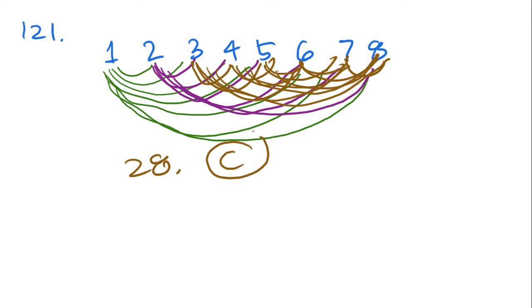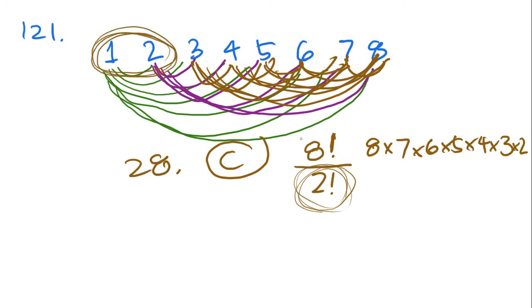So each game also only needs to be counted once, and there are eight teams here, seven teams, et cetera. So what we're really going to be looking for is eight factorial over two factorial. Now, this little exclamation point here doesn't mean that you shout the eight. It's not eight over two. When you see the factorial, that's the same as saying eight times seven times six times five times four times three, all the way to one.